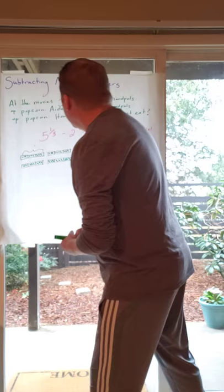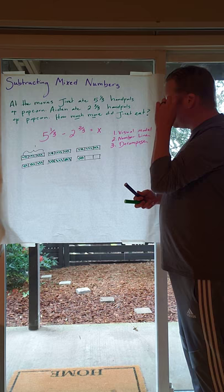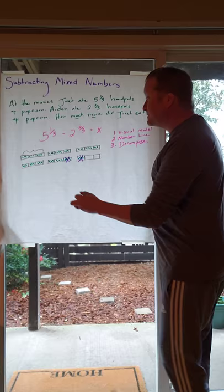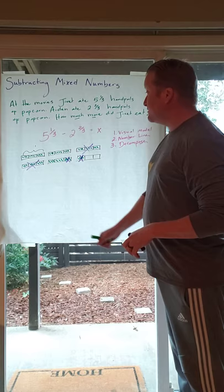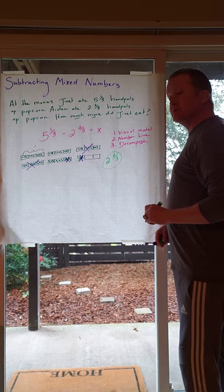So here we have a visual model that represents five whole objects and then a fractional part as one-third. And then we get to the easy part. Now, we're just going to subtract two and two-thirds. Well, in my mind, the easiest way to do this is just to start crossing them off. So let's cross out two-thirds first. There's one-third. There is two-thirds. That's gone. And now I'm going to subtract two wholes. Let's go one, two. And let's see how many we have left. We have one, we have two, and two more-thirds. So our answer here is going to be two and two-thirds.